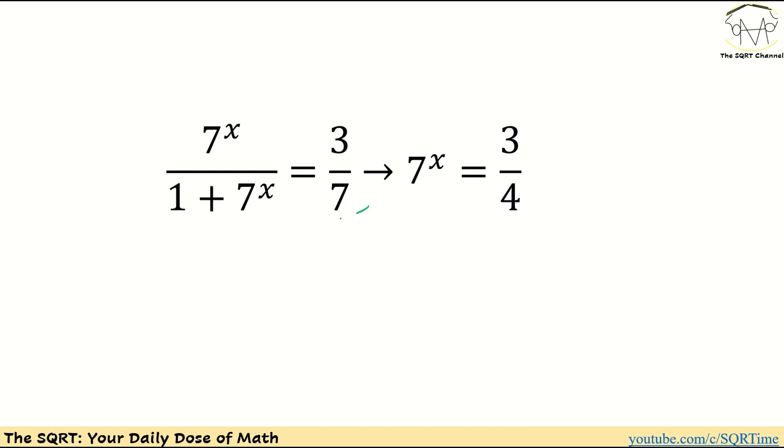Now I'm going to simplify things a little bit further. The first thing that I'm going to do, I'm going to write it as 7 times 7 to the power of x equals 3 plus 3 times 7 to the power of x. And then I'm going to move this to this side. It's going to be 7 minus 3 times 7 to the power of x equals 3, and then 7 to the power of x is going to be 3 over 4.